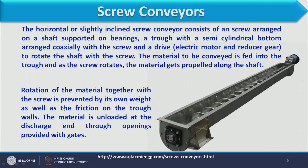Rotation of the material together with the screw is prevented by its own weight as well as the friction on the trough walls. We should not put a large amount of material at one time, because when the weight of material increases it will be difficult for the screws to carry the material. Therefore less material should be kept, because the weight of material as well as friction through the wall is the main obstruction for rotation of the screw. Material is unloaded at the discharge end through openings provided with gates — where we have to drop the material, we can put a gate at the bottom periphery of the casing. Intermittent discharge of material in screw conveyor is easily possible.